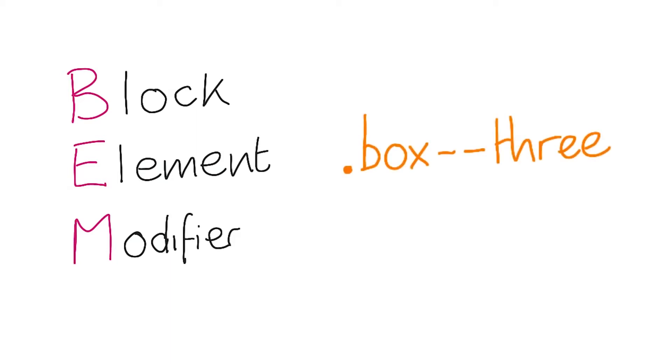In the case of the example we just had, you could probably use a class like this. It's a box, which would have been the block. There isn't any element, but the modifier would be, say, three to show that it's the third box.